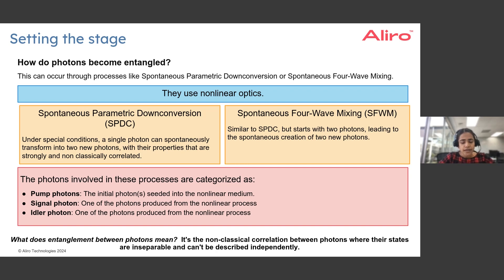So before we move on, let's take a step back and understand what entanglement really is. This specifically refers to a non-classical correlation that is present between two photons. The state of these two photons cannot be represented independent of each other — their state is represented in a non-separable form.